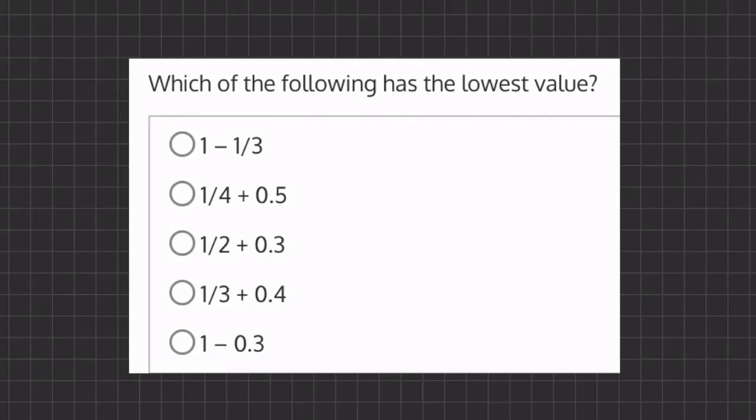All right, so in this problem, we are looking for our lowest value. Now, the easiest way to do so will be to turn all of our fractions into decimals and add them together. And then we can compare all of our answers through decimals.